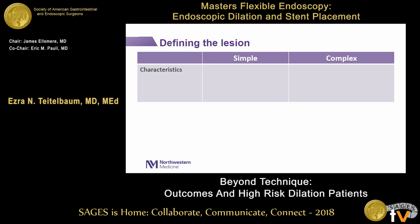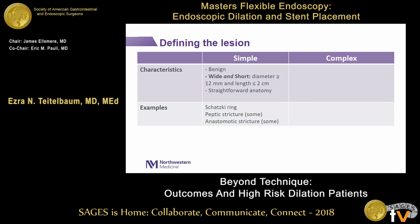Broadly, lesions can be classified as simple or complex. Simple lesions are benign — any malignancy makes it immediately a very complicated situation. Simple lesions are wide and short: a diameter of 12 millimeters or more, and a length of 2 centimeters or less. Most endoscopes are about 9 millimeters in diameter, so if you can easily pass the endoscope through the lesion, that means it's simple. Examples include a Schatzky ring, a peptic stricture, and an anastomotic stricture that fit those anatomic criteria.